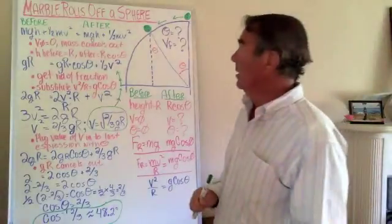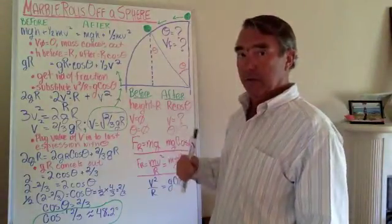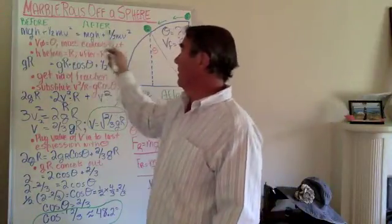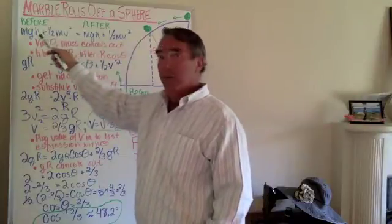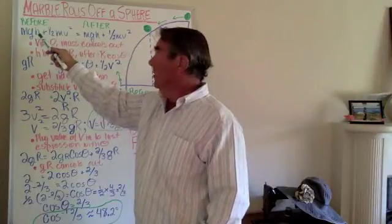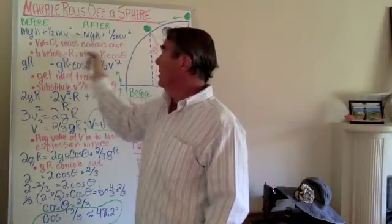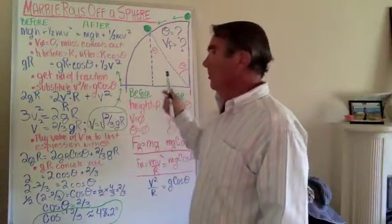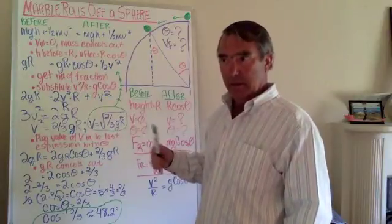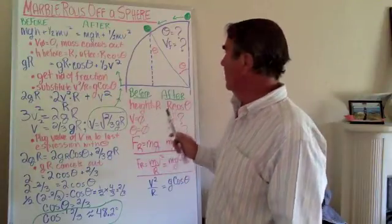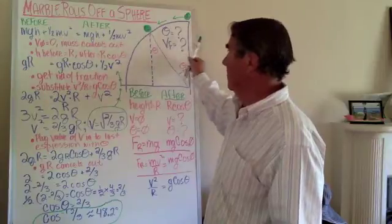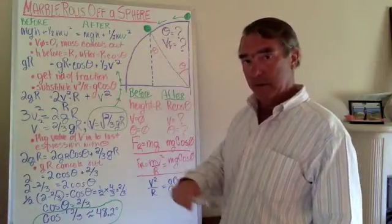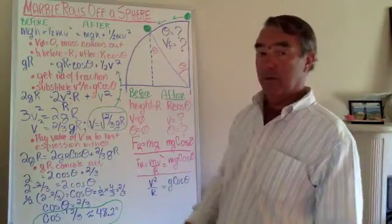There are three principles in mechanical physics to understand in order to solve this problem. The first being conservation of energy, which simply says that the sum of kinetic and potential energies in an object before and after an event sum to the same value. Newton's second law also applies here — force equals mass times acceleration — and since this question involves circular motion, that same force is equal to mass times velocity squared over r: F = mv²/r.